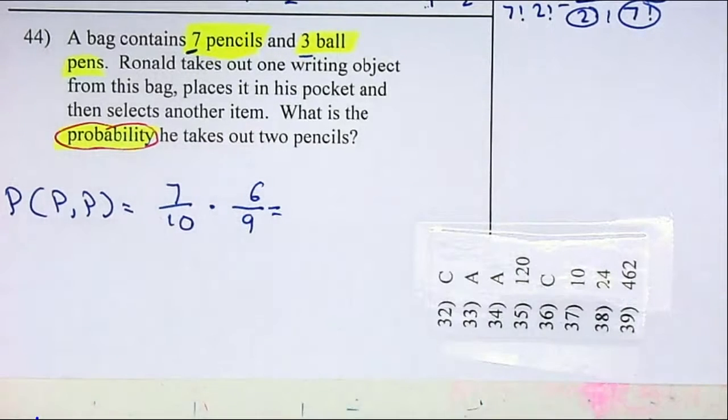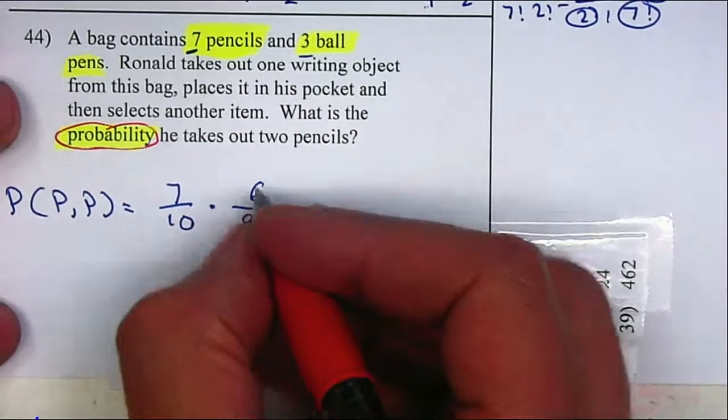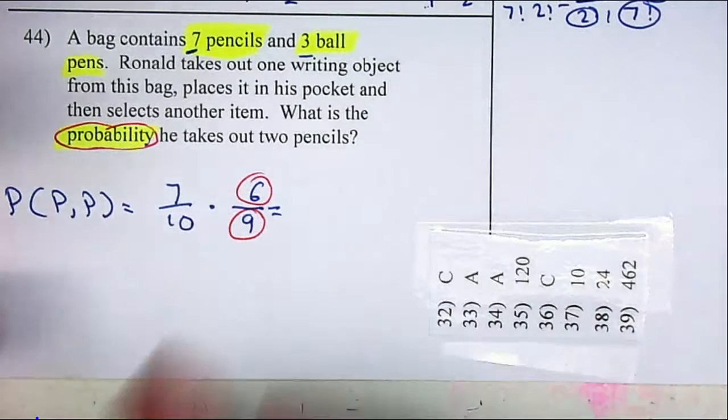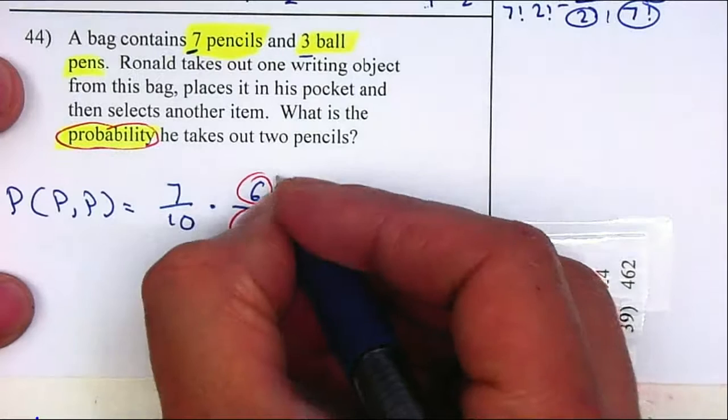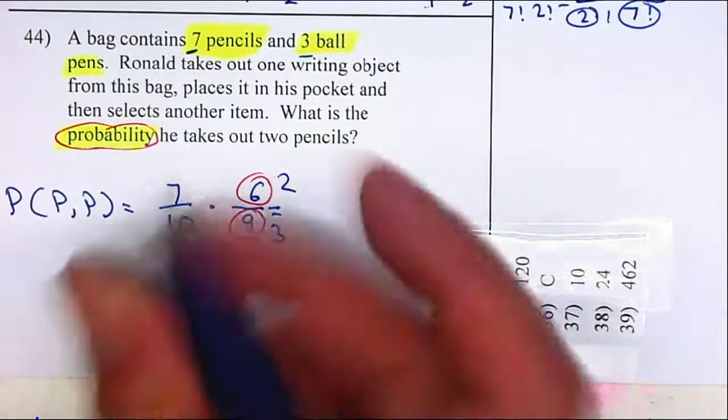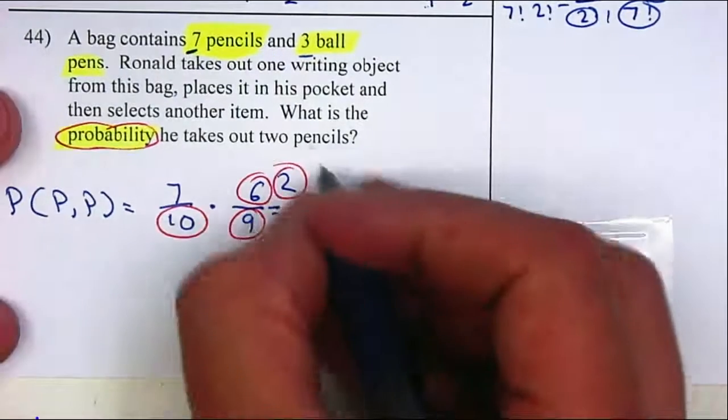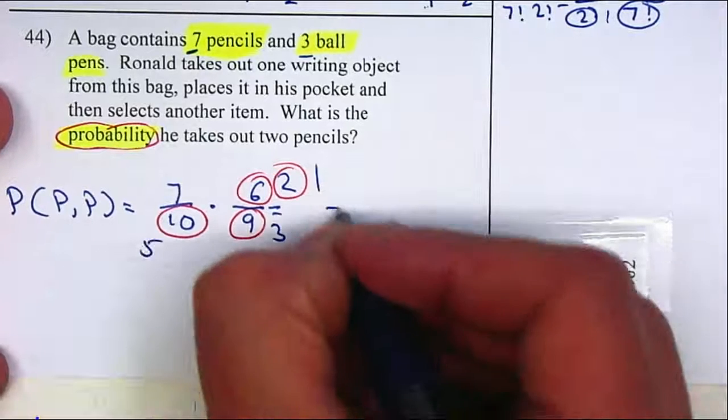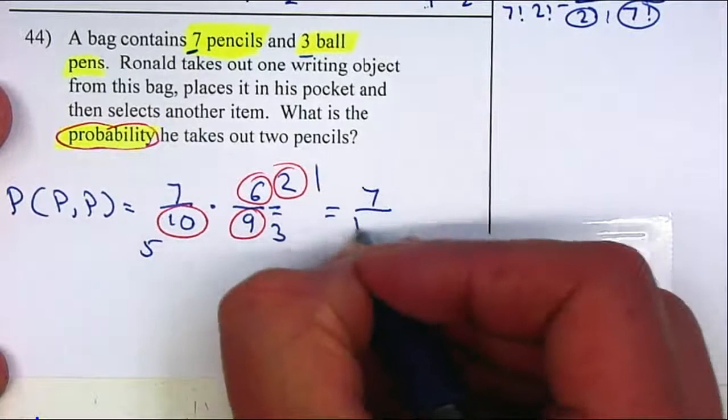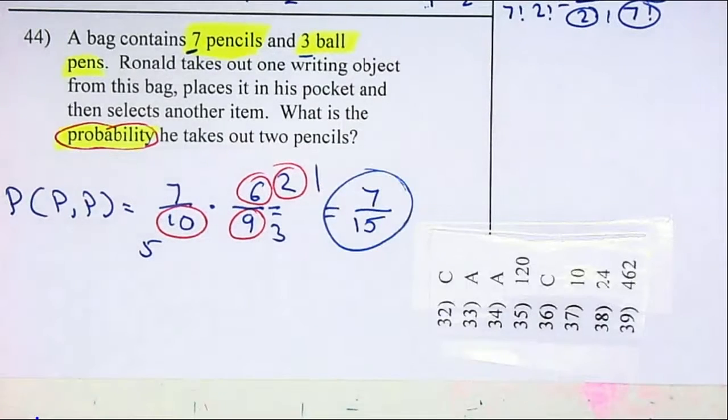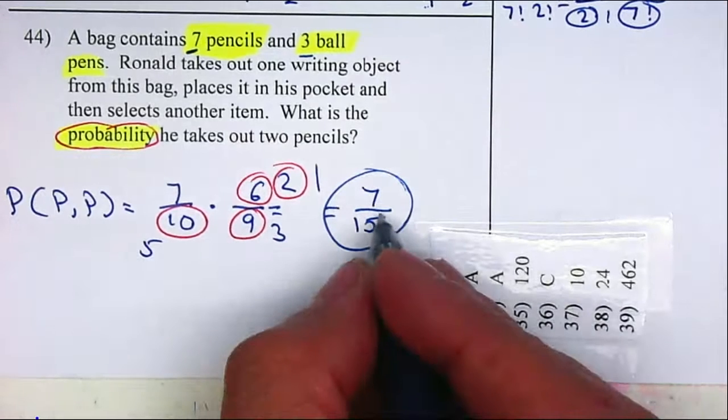And from there we just multiply. Now remember, it's best to reduce your fractions first. So divide by three gives me a two and gives me a three. I can simplify my ten and my two, divide by two gives me a one and gives me a five. So we get our final answer, or a little less than fifty percent.